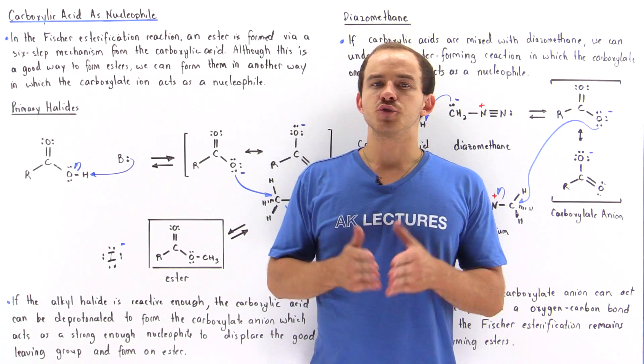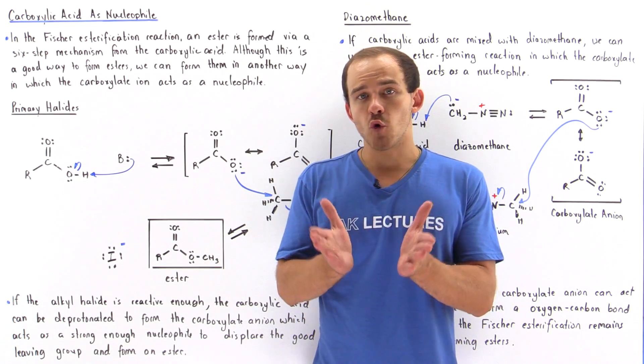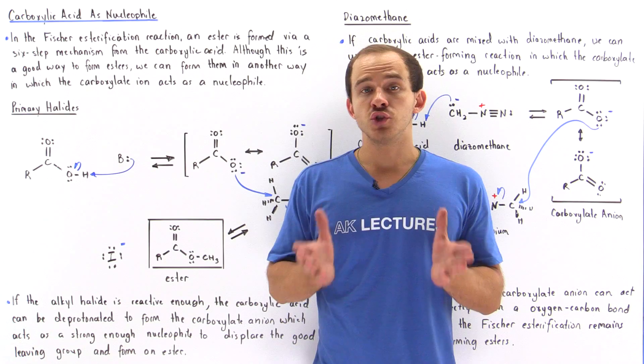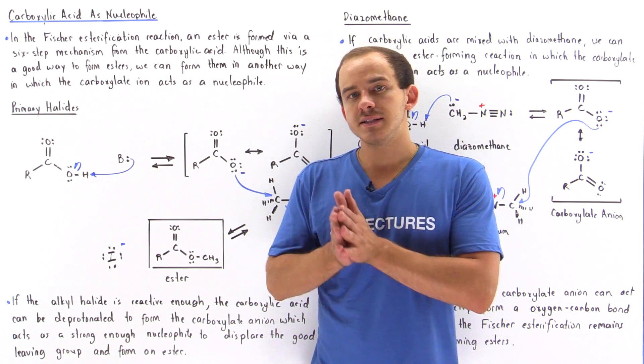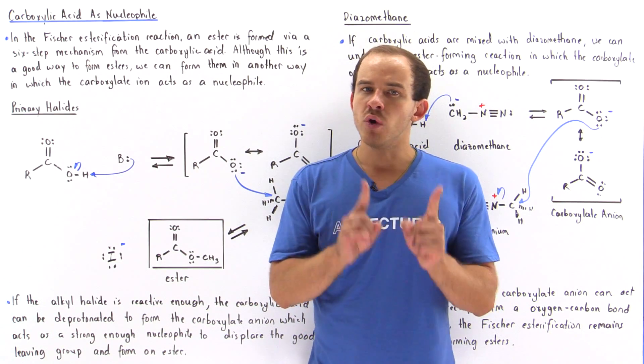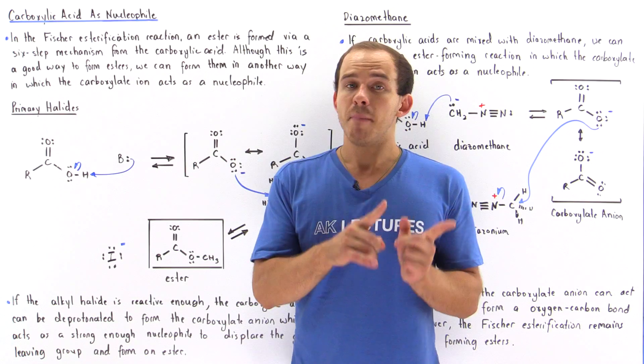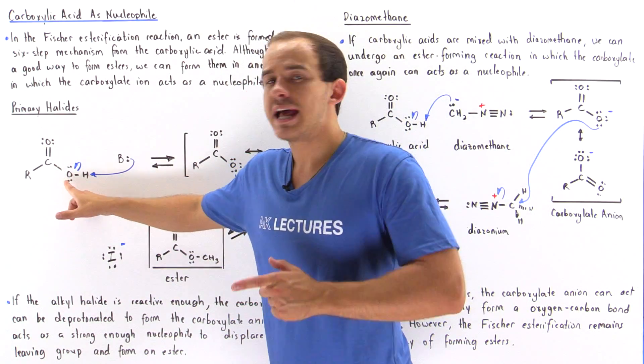In the Fischer esterification reaction, we basically transform a carboxylic acid into an ester via a six-step reaction mechanism in which we have to break the bond between carbon and oxygen.